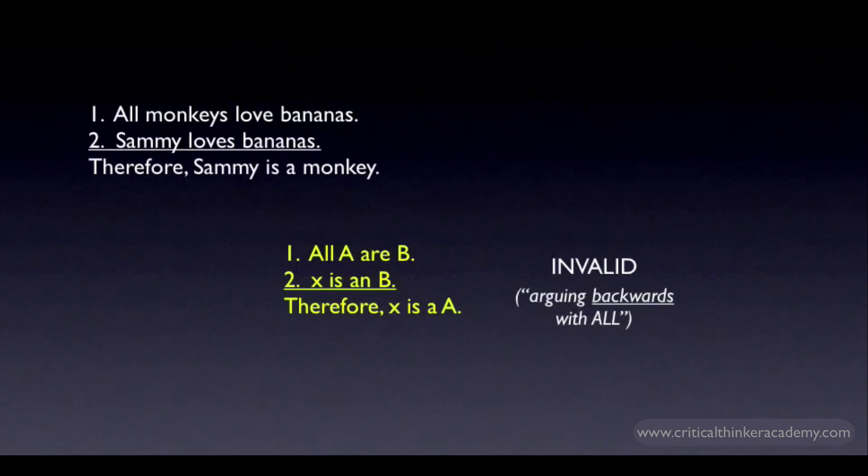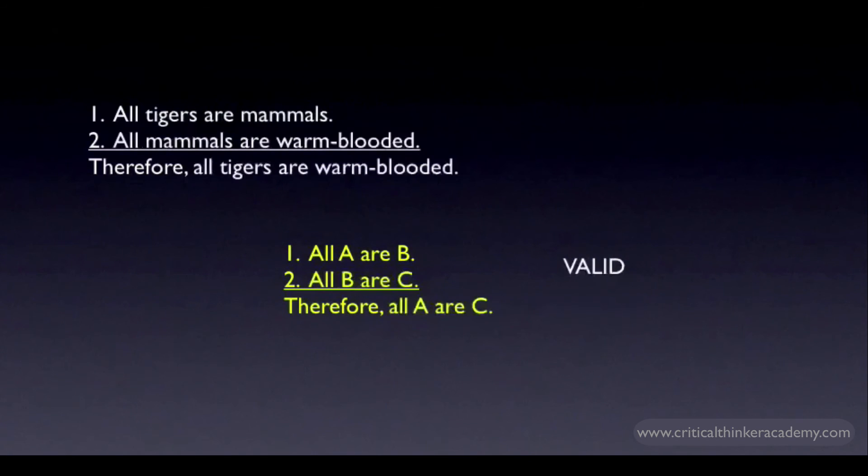Here's another valid argument that uses all. All tigers are mammals. All mammals are warm-blooded. Therefore, all tigers are warm-blooded.